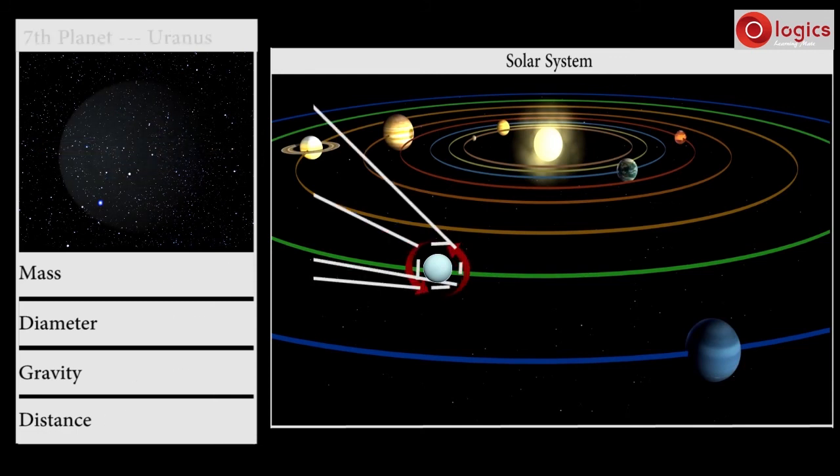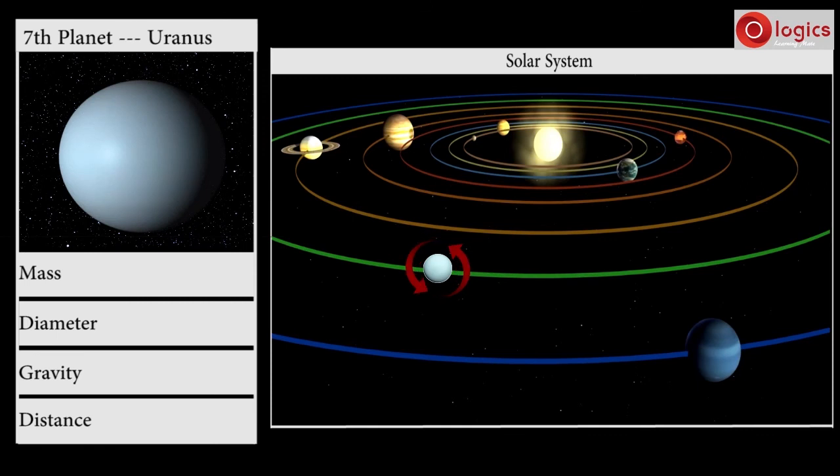The seventh planet in our solar system is Uranus. Its mass is 8.681 × 10^25 kilograms. Uranus' diameter is 50,724 kilometers. Gravity on Uranus is 8.69 meters per second squared, and Uranus is 2.871 billion kilometers from the Sun.